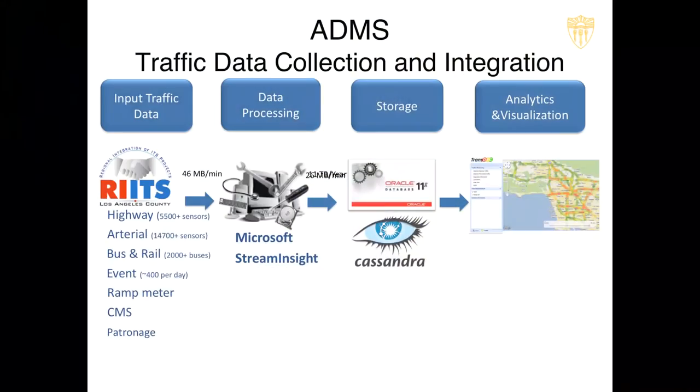We partnered with Microsoft and did two years of research with them. One of our techniques has been incorporated into their system called Microsoft Stream Insight. We use this system also to clean the data on the fly. The data comes with a lot of headers — junk information, inaccurate information. We use this system to clean on the fly as well. After we clean the data, the data size drops from 46 to 26 megabytes per minute — quite a significant reduction.